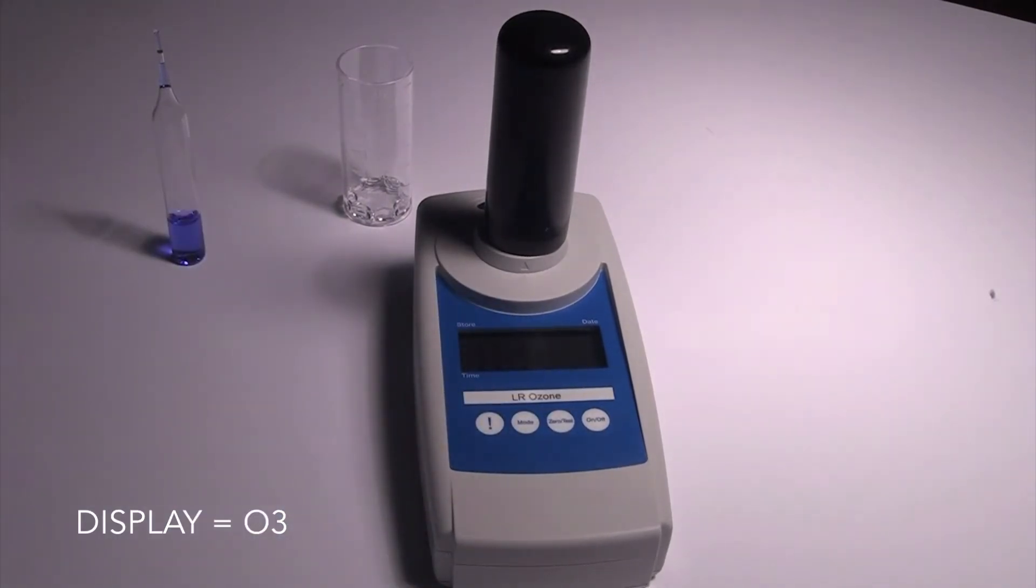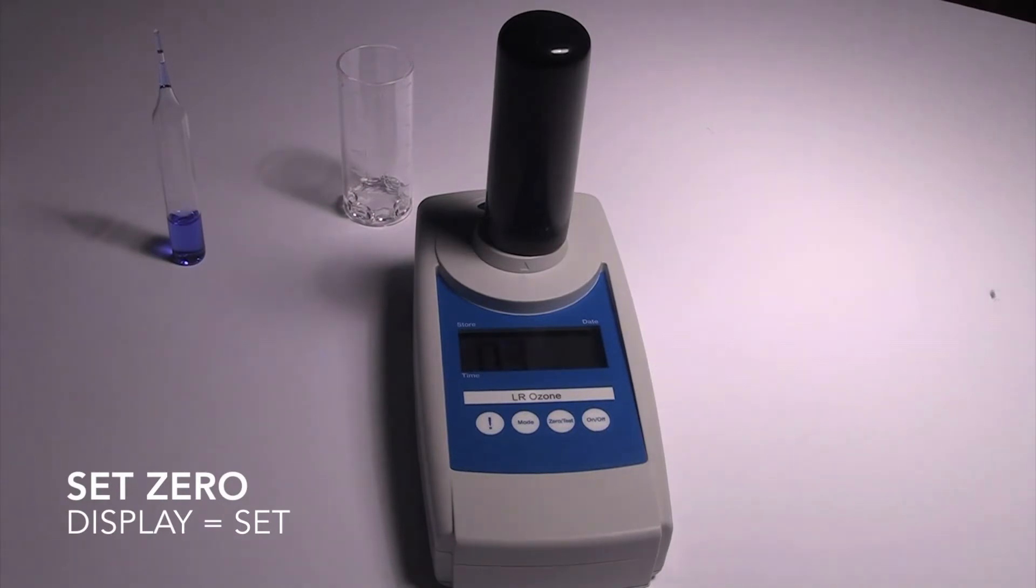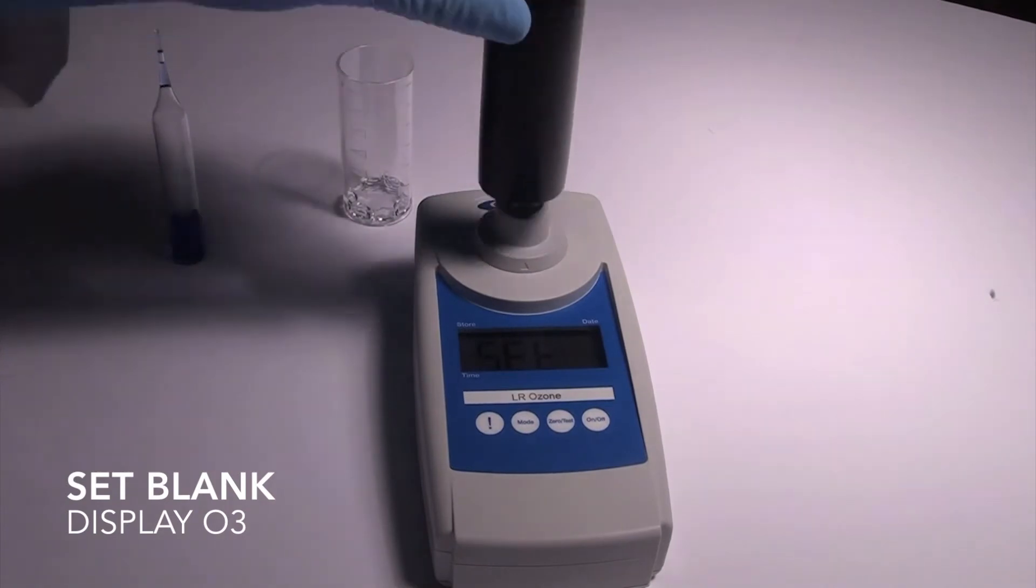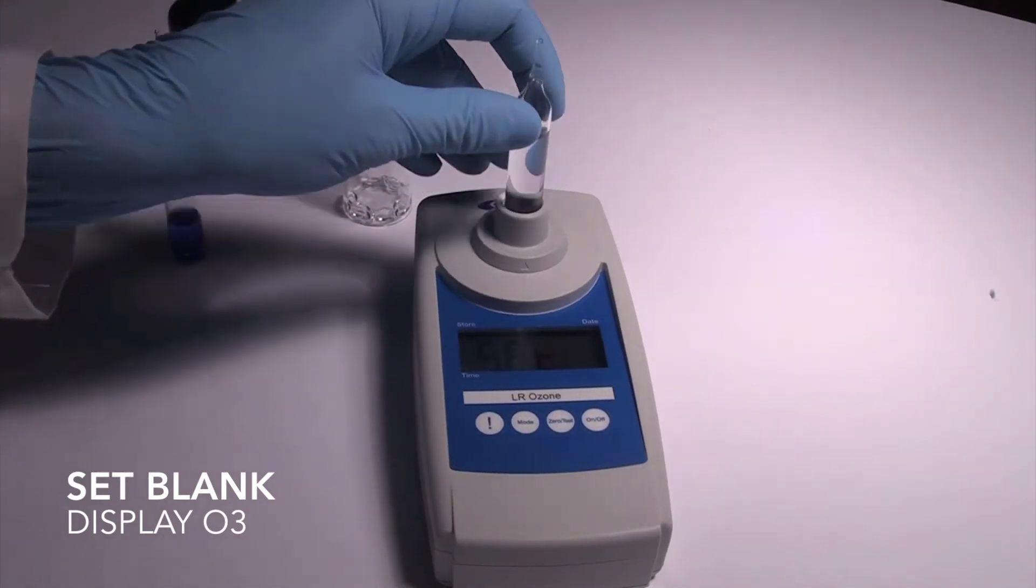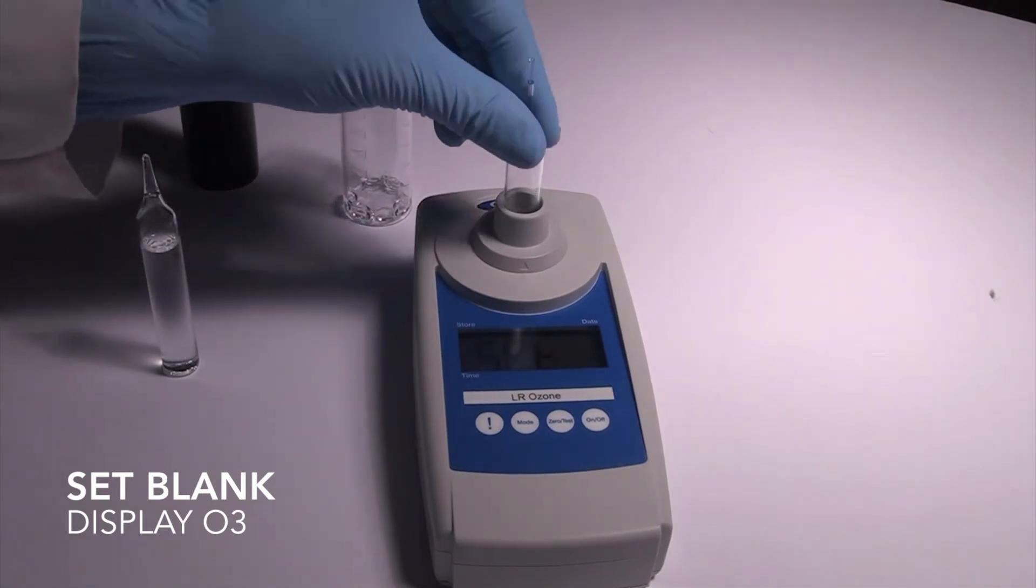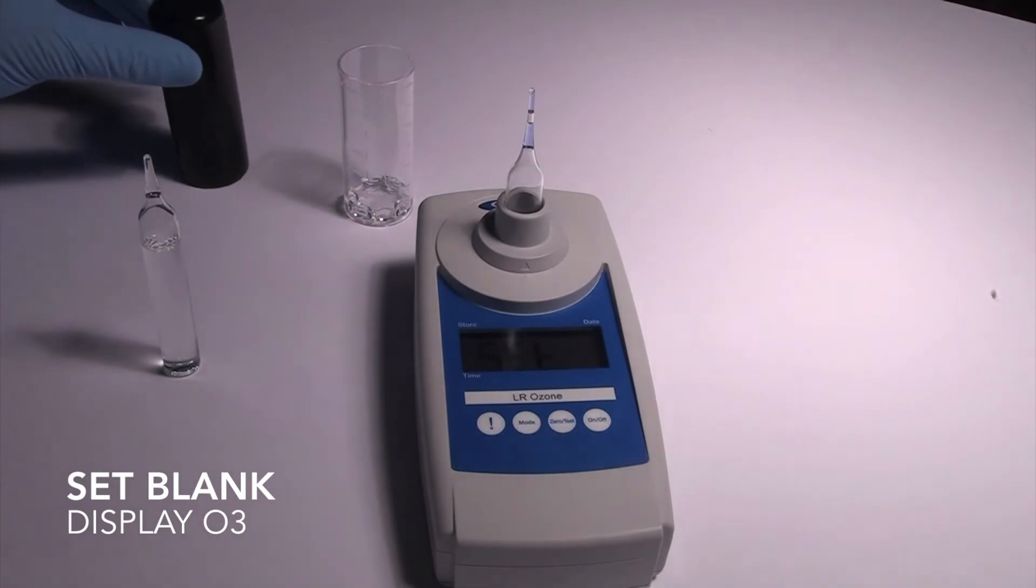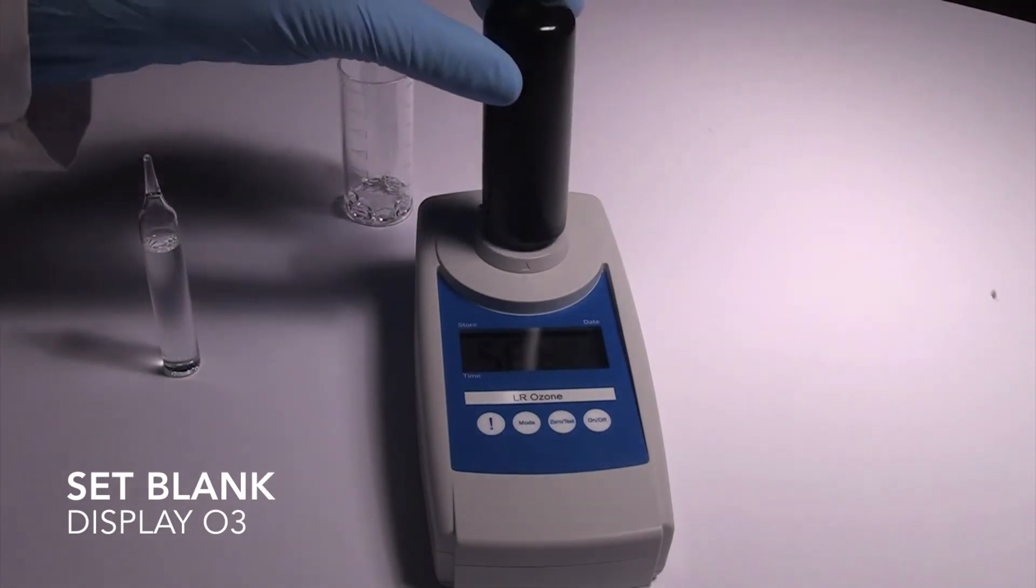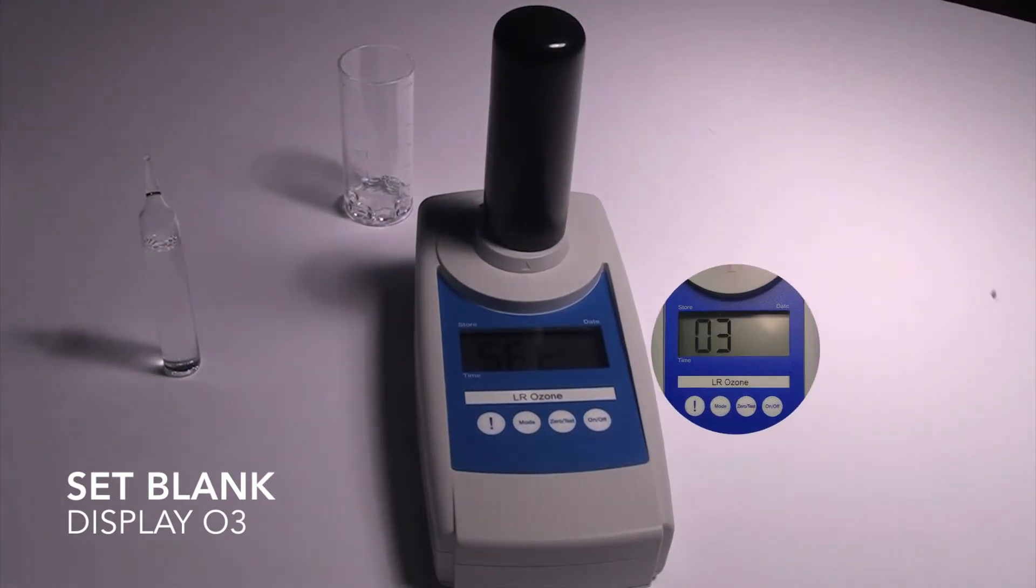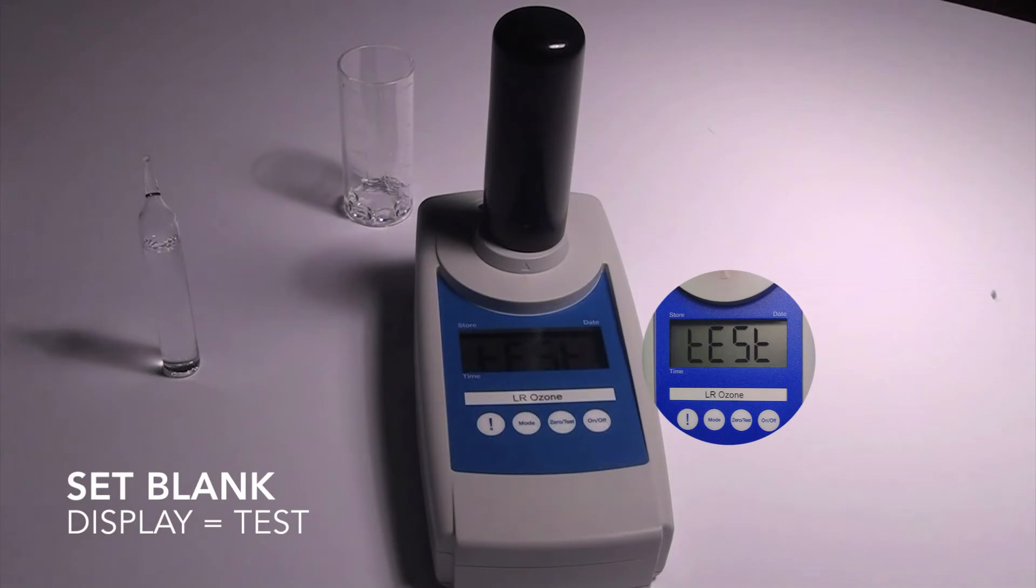The ozone symbol will flash for approximately 8 seconds, and then the display will show SET. Next, generate a reagent blank value. The SAM has now stored a reagent blank value for this ampoule.